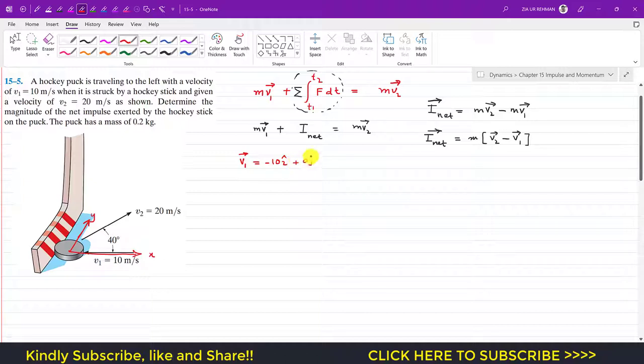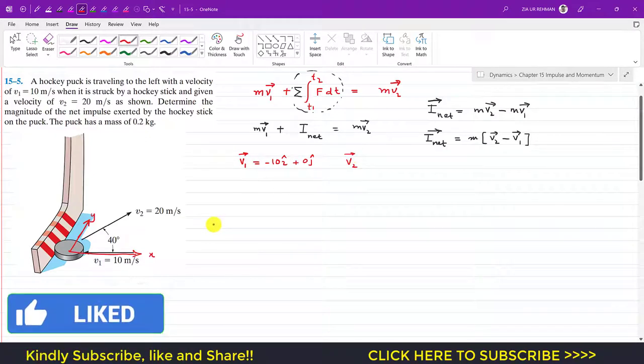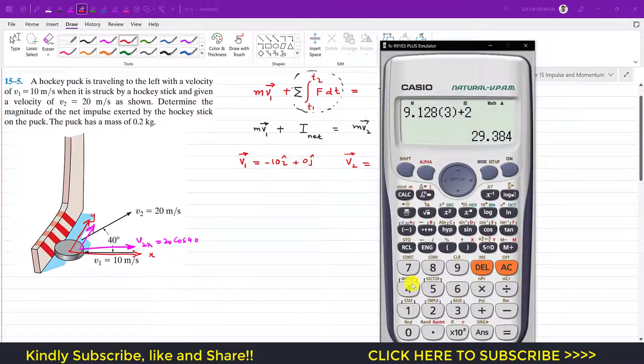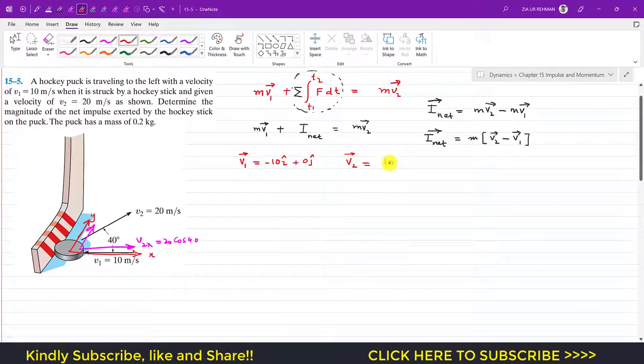Similarly, we can write v2. We can resolve that v2 along the x and y axis, so it will have two components. This is the v2 x-component, which is 20 cos 40°, and we will have one another component that is the sine component. This is acting in the positive x-axis, that is in the positive i. So let me find 20 cos 40°. 20 cos 40° is 15.32, so 15.32 in the positive i.